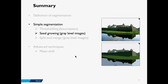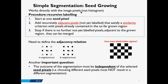Now let's move to the next simple segmentation technique: region growing, also called seed growing. This method works directly with image pixels rather than the histogram. The procedure is as follows: we start with one pixel called the seed pixel, then recursively add pixels in the neighborhood that satisfy some similarity criterion, and stop when no more neighboring pixels satisfy that criterion.